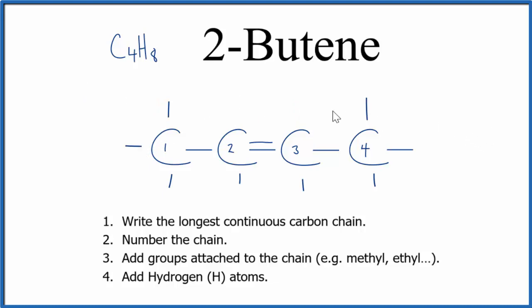So this is the structural formula for 2-butene. We have four carbons, that's the bute. We have ene, that's the double bond. And it's on the second carbon.